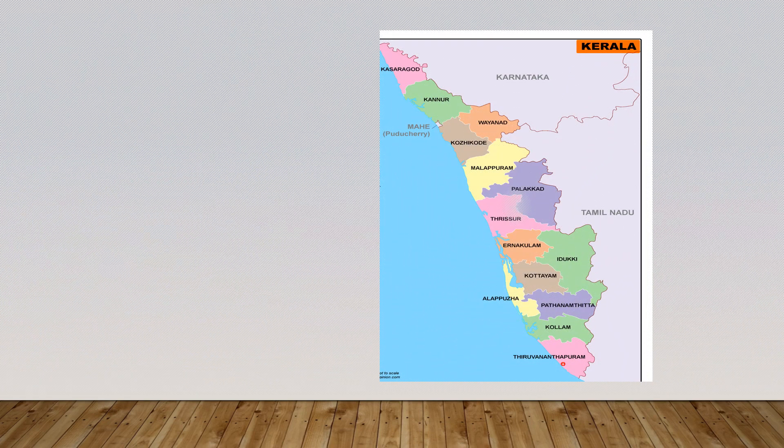Now, see the map of this state. It has 14 districts. Do you know which state it is? See — Kasaragod, Kannur, Kozhikode, Wayanad, Malappuram, Palakkad, Thrissur, Ernakulam, Idukki, Kottayam, Alappuzha, Pathanamthitta, Kollam, Thiruvananthapuram. These are the 14 districts.